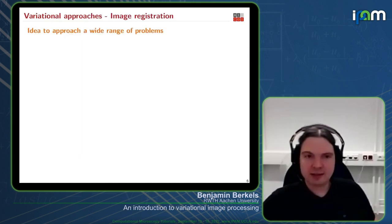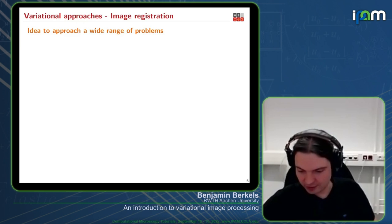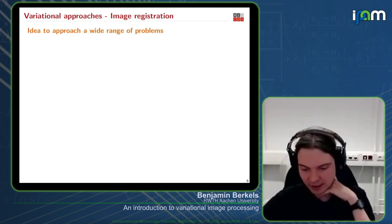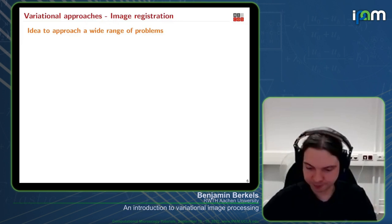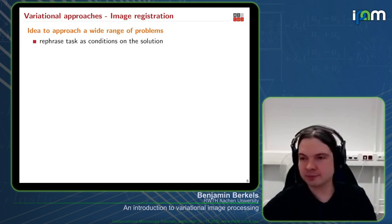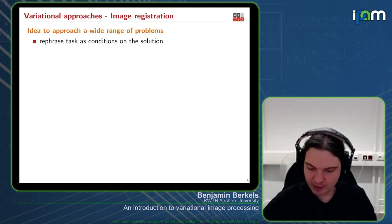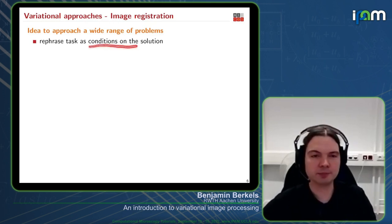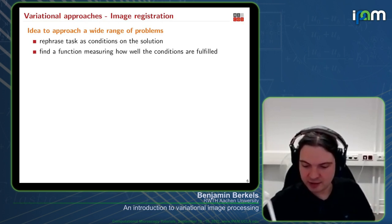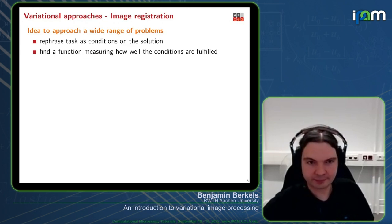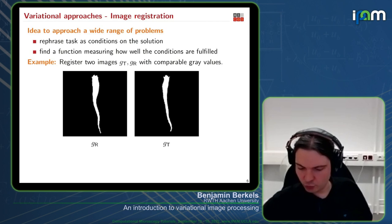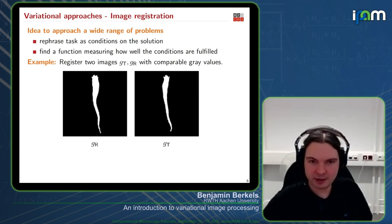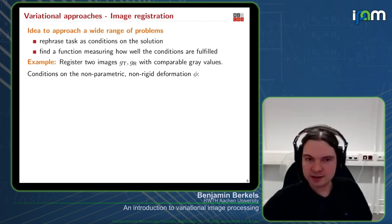In the title I said 'variational image processing,' and we haven't yet touched what that variational approach means. It can be seen as an idea to approach a wide range of problems. You have your task at hand — say registration — and you rephrase it as conditions on the solution. For two gray-value MR slices of sugar beets, we would align them by finding a non-parametric non-rigid deformation. A simple shift is not enough; we really need to deform in a very nonlinear way.